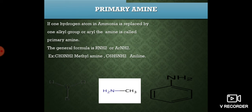In primary amines, one hydrogen atom in ammonia is replaced by an alkyl group (CH3) or aryl group (C6H5). The general formula is R-NH2, alkyl-NH2, or aryl-NH2. For example, alkyl-NH2 is methyl amine, and the aromatic primary amine is aniline, where a benzene ring is bonded to NH2.